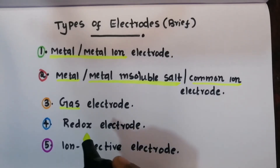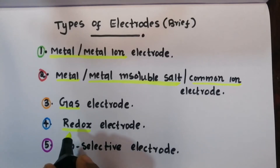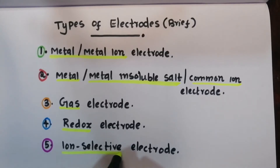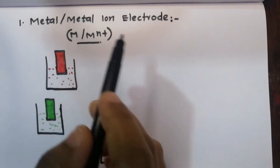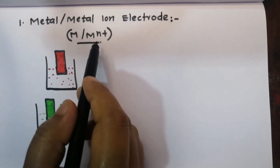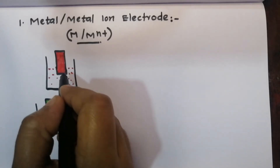Here is a gas electrode, where a gas is bubbled through. Here is a redox electrode, involving a redox reaction — that is both oxidation and reduction. And the last one is an ion selective electrode, which is specific to a particular molecule or ion.